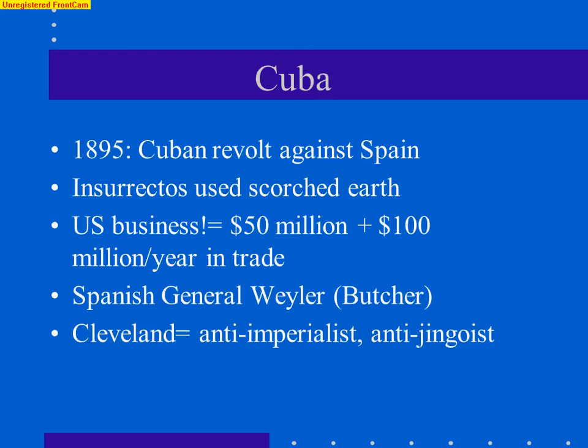The United States took notice because of American business interests there. We were making about $100 million every single year off of trade with Cuba, and there was a lot of American property. We became worried about whether our citizens and their property were safe. We began urging Spain to deal with this and bring it to an end. Instead, Spain sent in General Weyler to put an end to the rebellion — or, as the Cubans called him, the butcher. He forced the insurrectos into reconcentration camps, where many died from disease, starvation, etc. All of this was being written about in American newspapers, especially through yellow journalism.